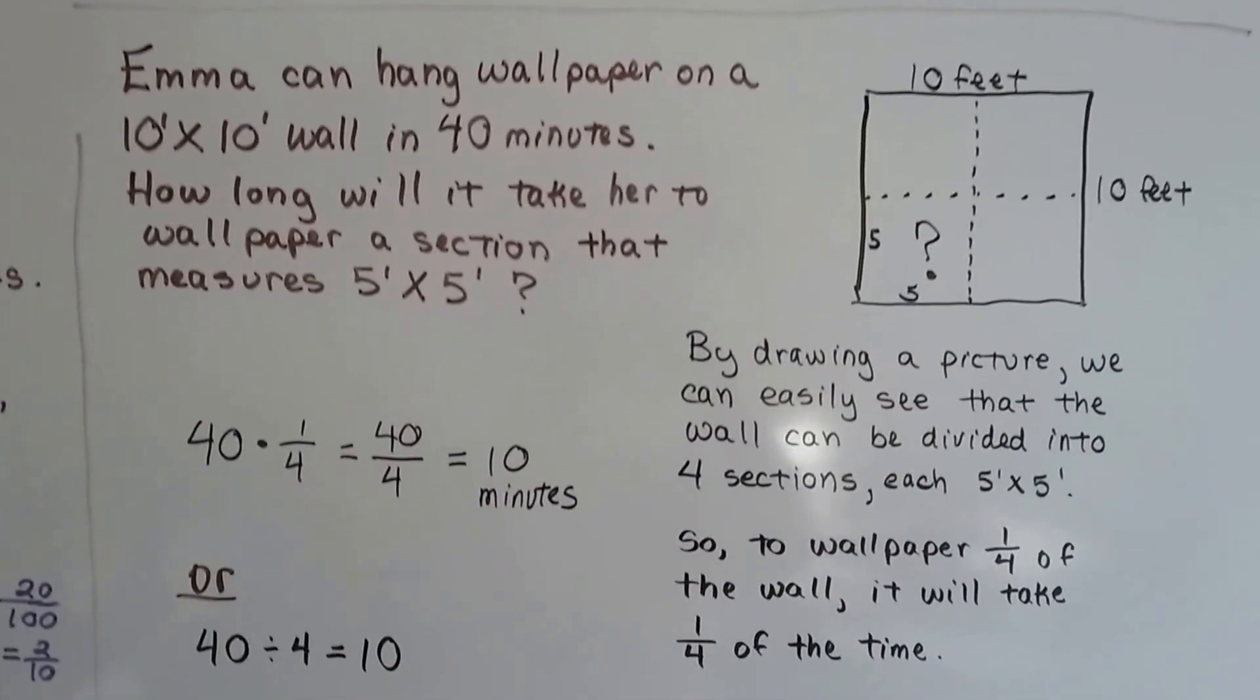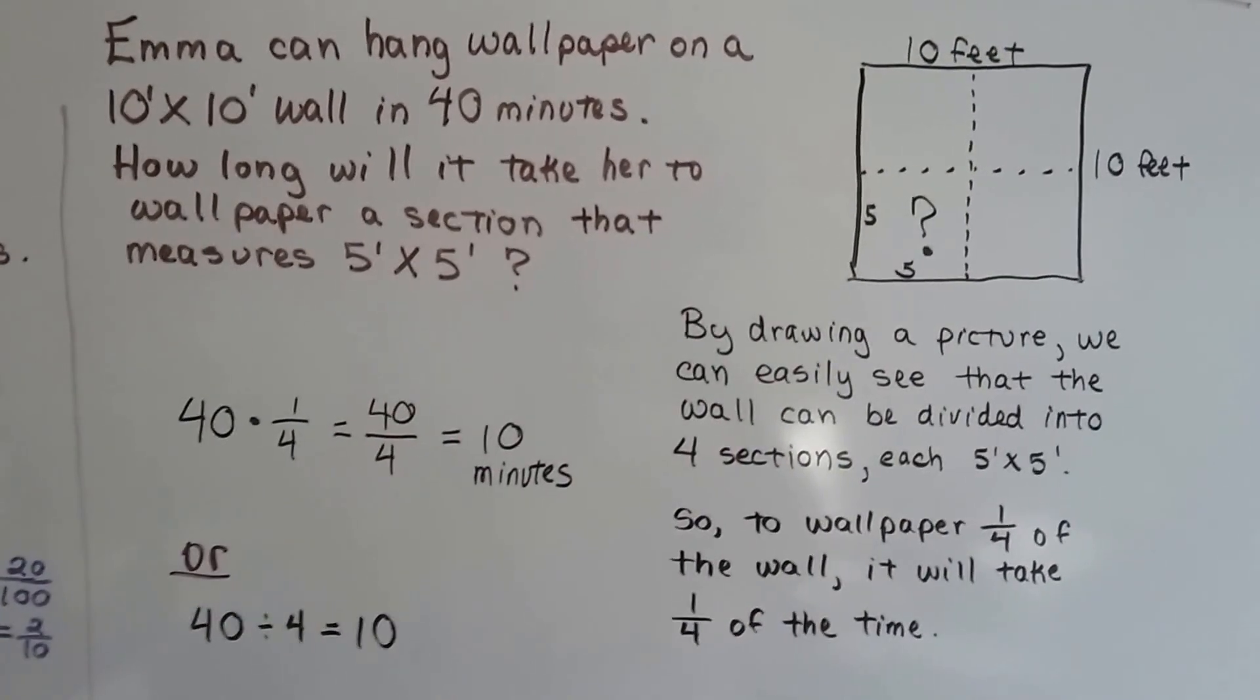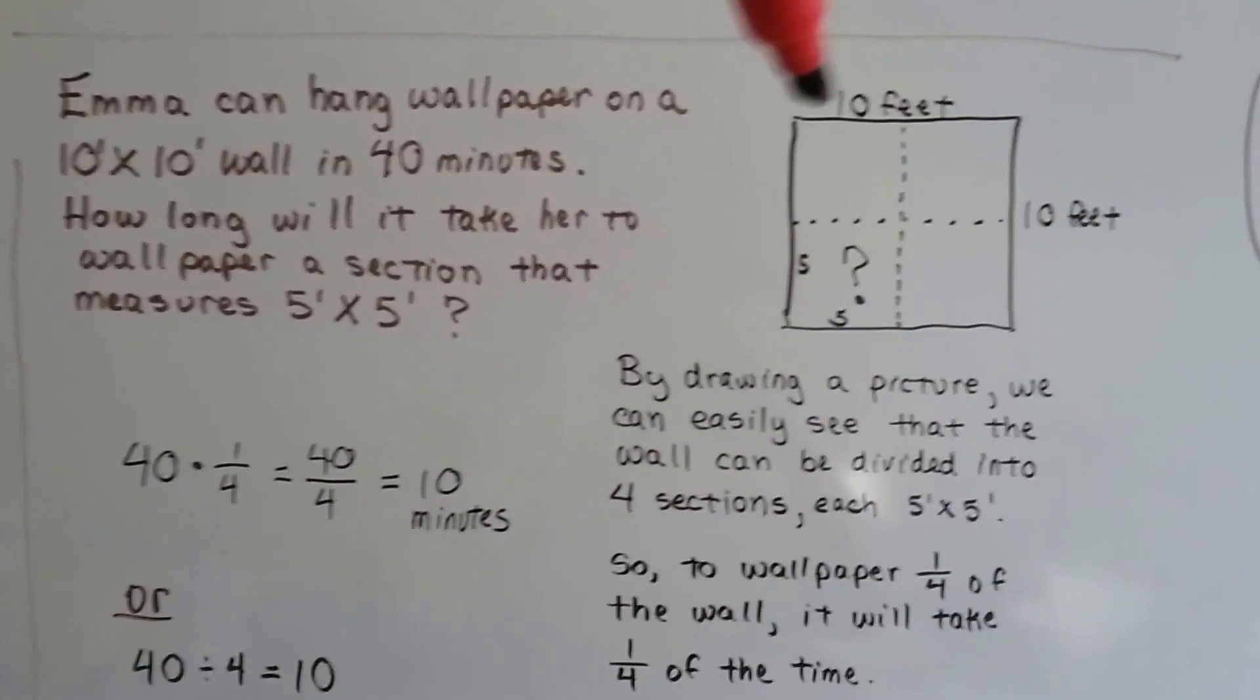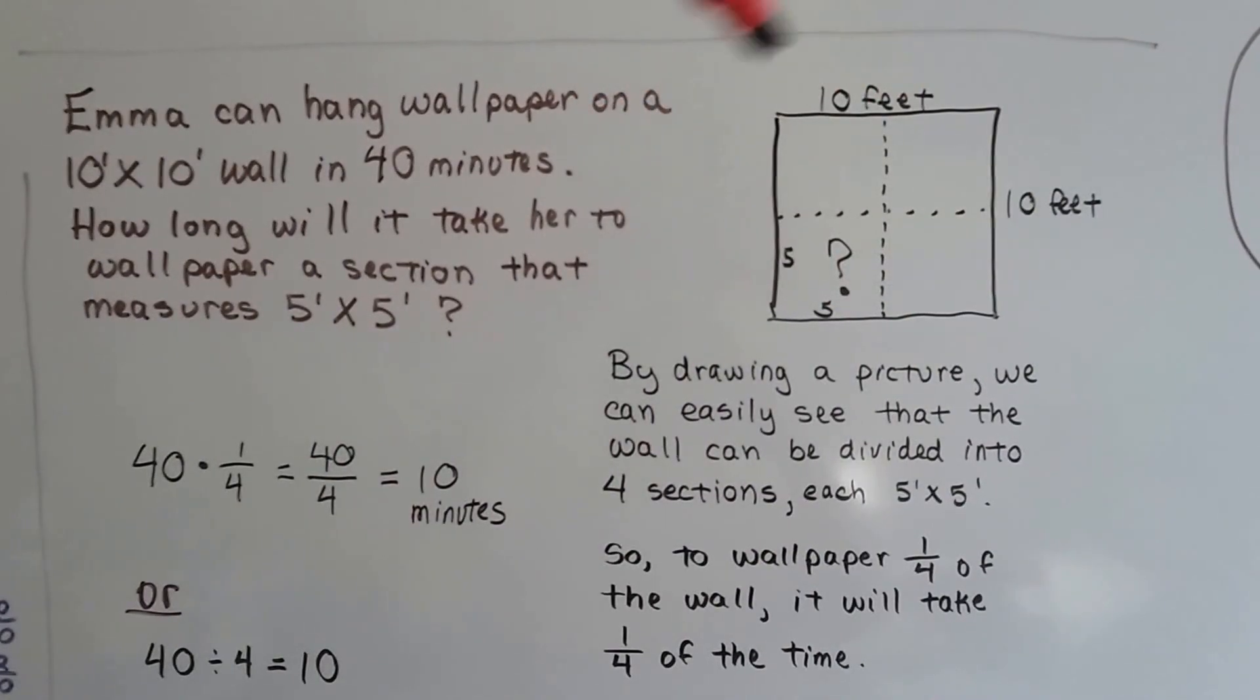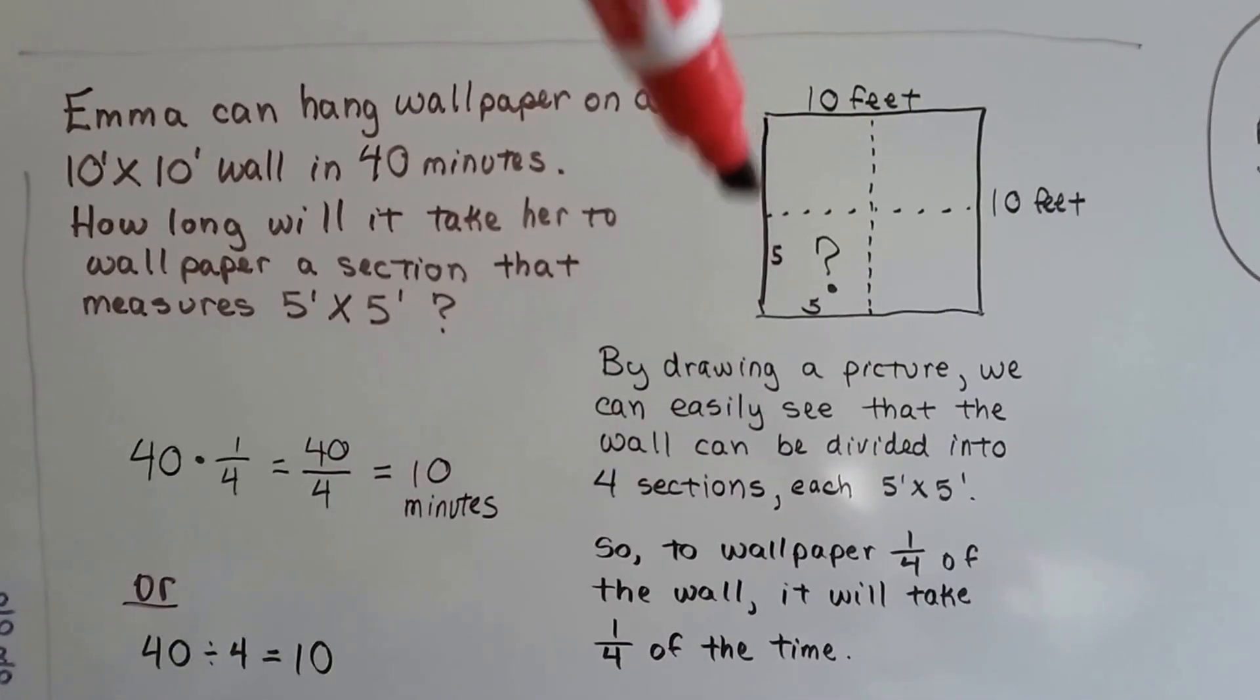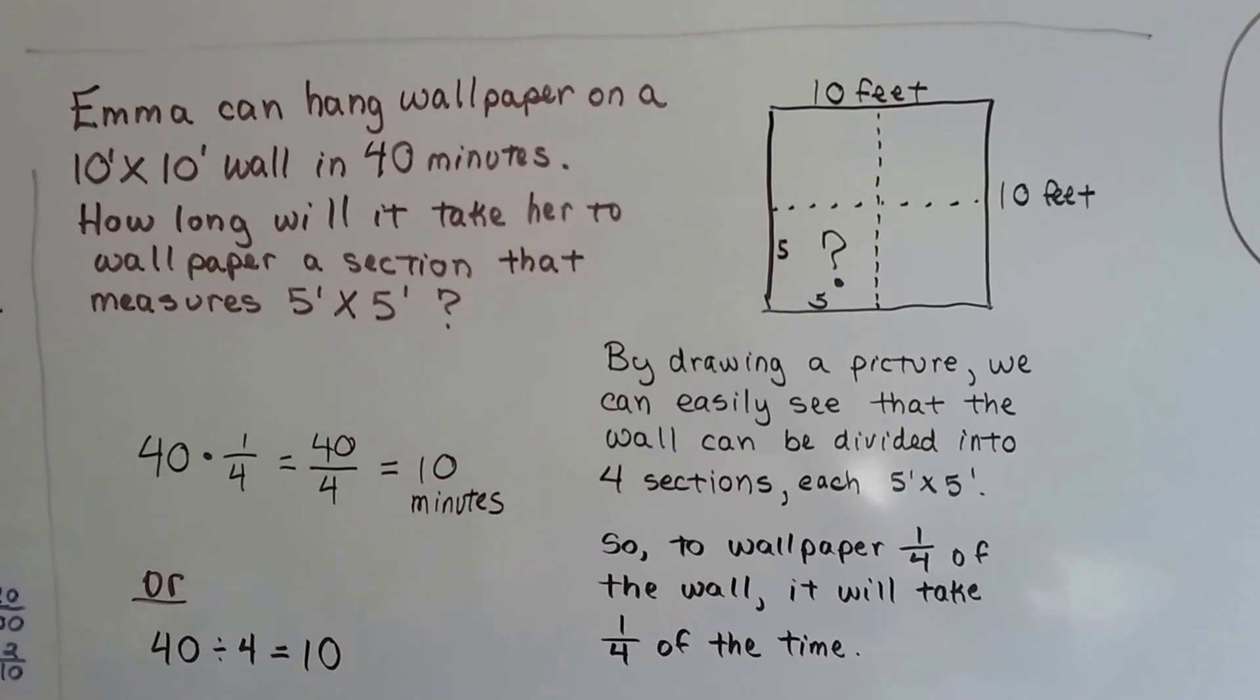How about this one? Emma can hang wallpaper on a 10 foot by 10 foot wall in 40 minutes. How long will it take her to wallpaper a section that measures 5 feet by 5 feet? So if the wall is 10 feet by 10 feet, again, it's a perfect square, and it's 10 feet on each side. And if we have a section that's 5 feet by 5 feet, that's half of this length and half of that length, so we're going to end up making 4 equal squares inside of this square.